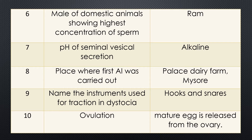Question 6. Male of domestic animals showing the highest concentration of sperm. Answer: ram semen shows the highest concentration of sperm in domestic animals. Question 7. What is the pH — alkaline or acid — of seminal vesicle secretion? Answer: the secretion of seminal vesicle is generally alkaline in nature.